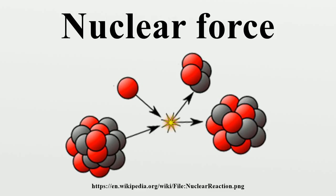The mass of a nucleus is less than the sum total of the individual masses of the protons and neutrons which form it. The difference in mass between bound and unbound nucleons is known as the mass defect. Energy is released when some large nuclei break apart, and it is this energy that is used in nuclear power and nuclear weapons.